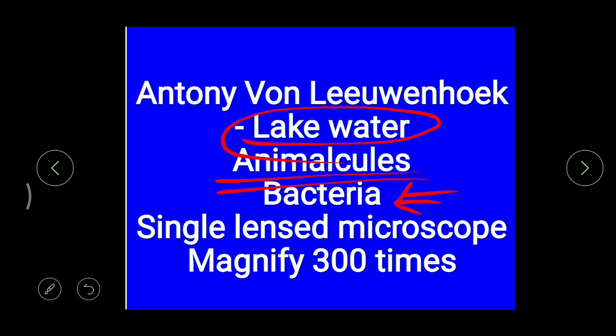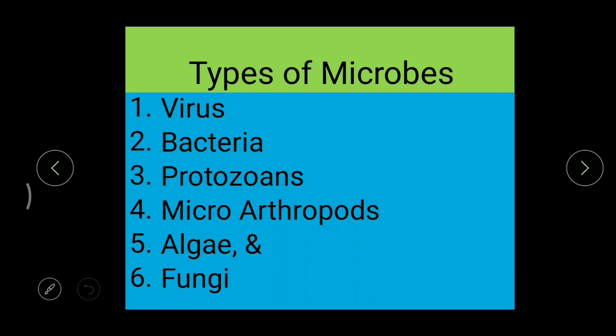That microscope had the capacity to magnify microorganisms 300 times. Magnify means making them bigger — making them appear larger. Now let's move to the next topic: types of microbes. When we observe microorganisms, we can find firstly virus, then bacteria.